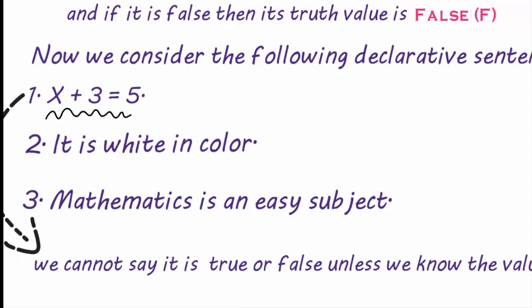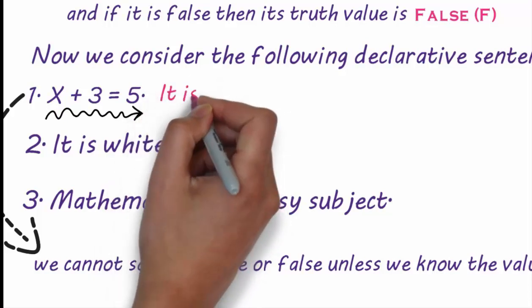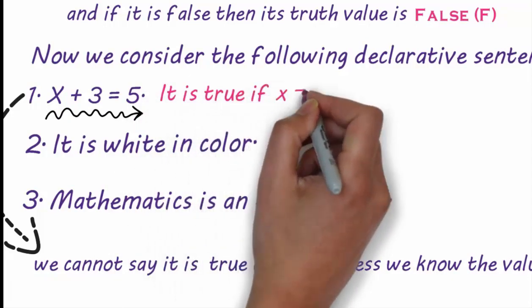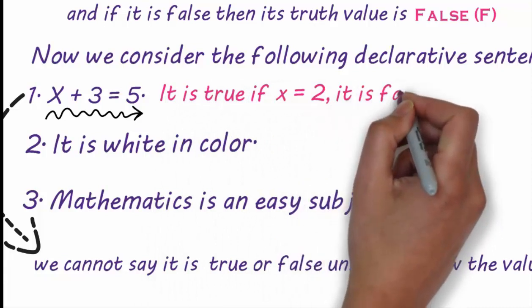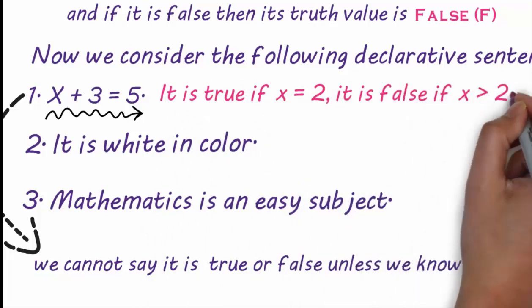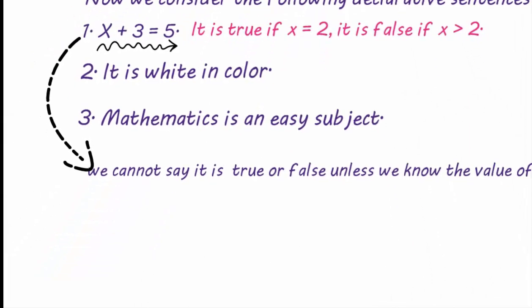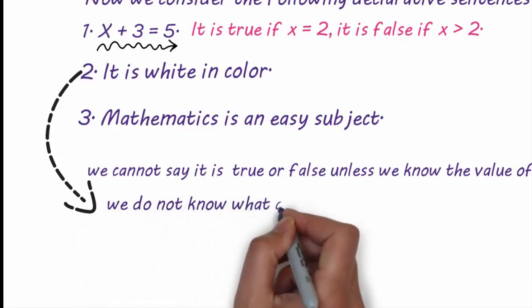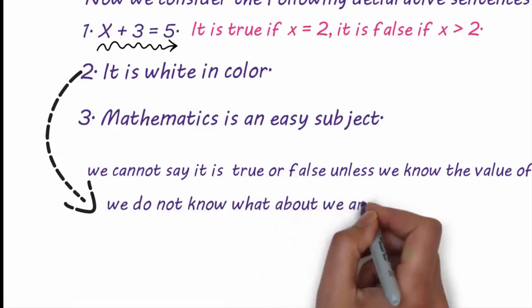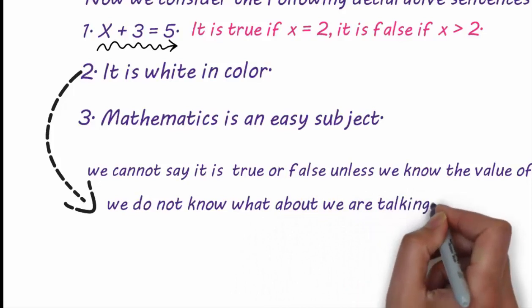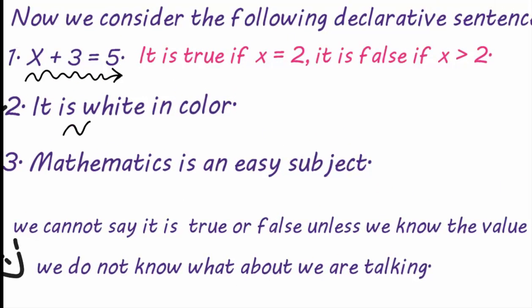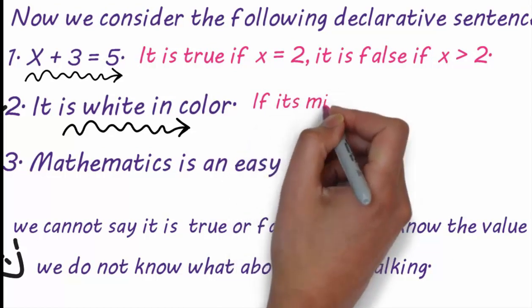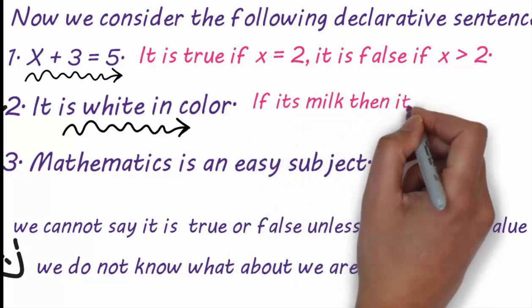x plus 3 is equal to 5. It is true if x is equal to 2, and it is false if x is greater than 2. In the second sentence, we do not know what we are talking about. It is white in color: if it is milk then it is true, and if it is coffee then it is false.